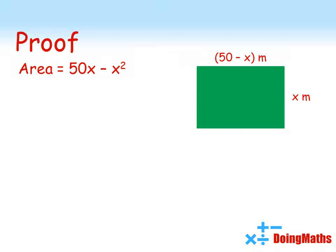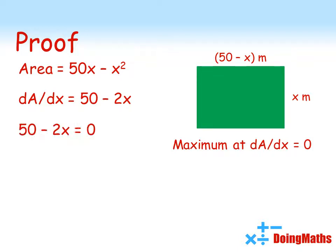Now, to work out the best solution, we're going to use a bit of differentiation. So, if I differentiate our expression for the area, I get 50 minus 2x. Now, the best solution for this will be when dA by dx is equal to 0. So, if we set 50 minus 2x equal to 0, that means 2x is equal to 50, x equals 25.